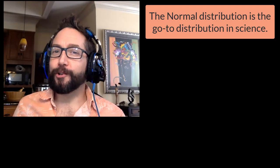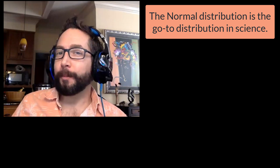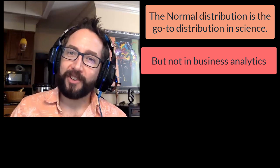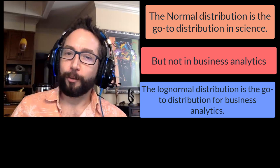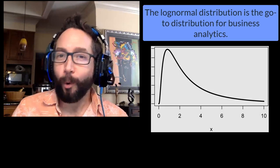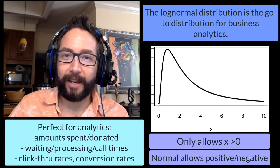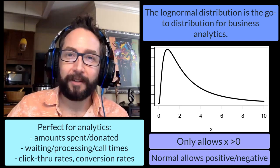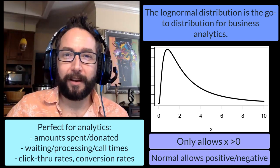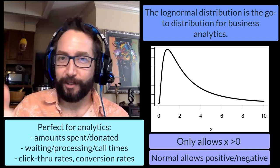While the normal distribution is extraordinarily popular in mathematics and science, it isn't normally where we want to be in business analytics. The go-to distribution in business analytics is the log normal distribution. Its key feature is that it only allows positive quantities, which is typically what we find in business analytics — amounts purchased, call times, wait times — these are always positive. By definition, the log normal probability distribution only allows positive values.